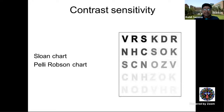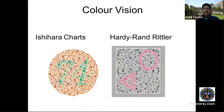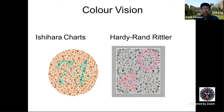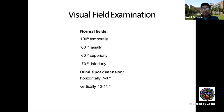Color vision — dyschromatopsia — is a very sensitive indicator of optic nerve function. If color is significantly affected in the presence of normal visual acuity, you strongly suspect an optic nerve problem. Alternatively, if visual acuity is subnormal but color is far more affected than what would normally be expected — for example compared to a cataract with similar acuity — this again suggests optic nerve dysfunction.